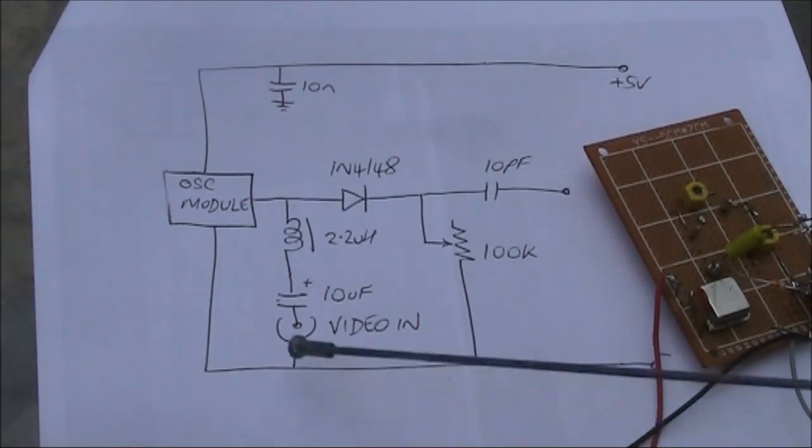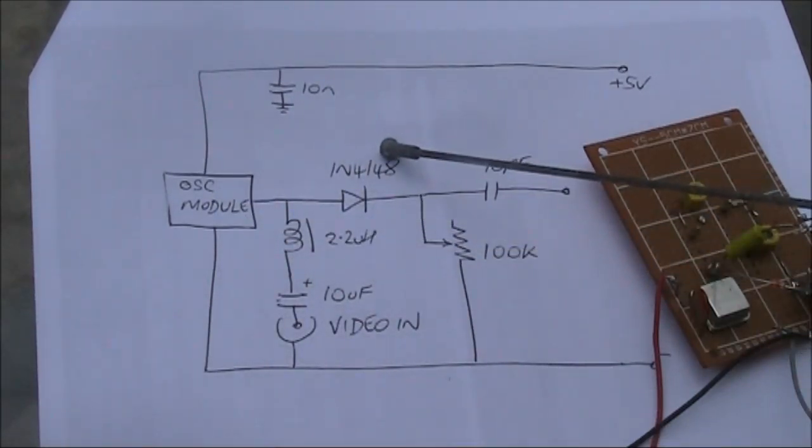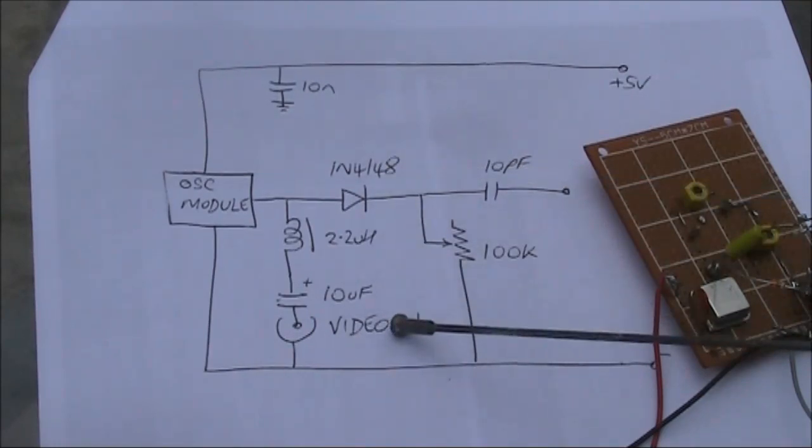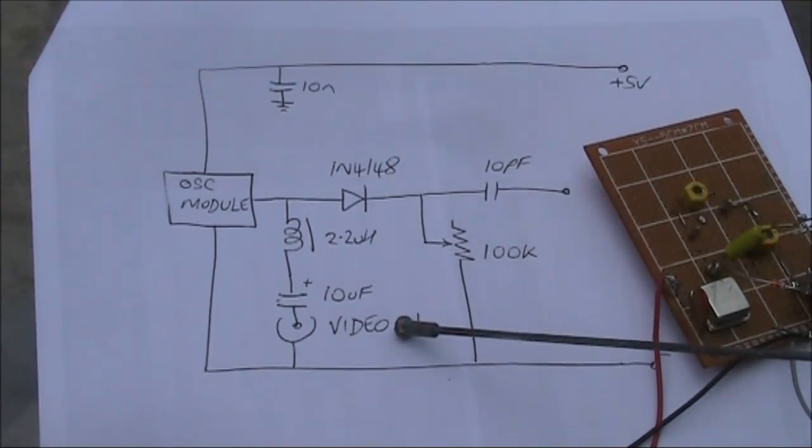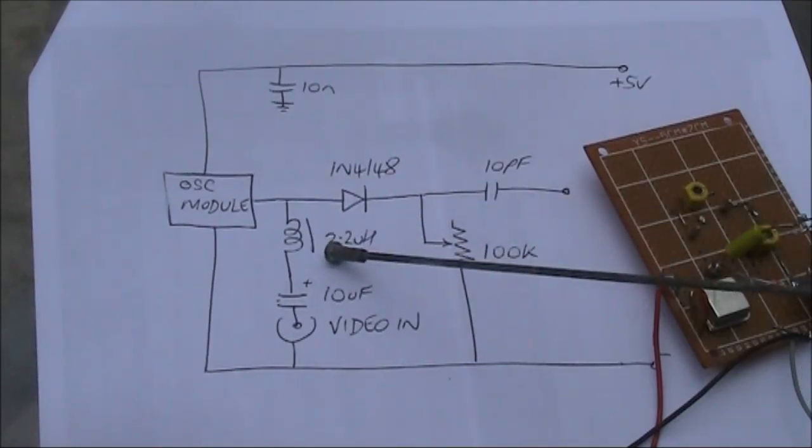Here's a modified circuit. The crystal oscillator module is still there, as is the 1N4148 diode, but this time the video is injected to the anode side of the diode. That injection goes through a 2.2 microhenry RF choke.